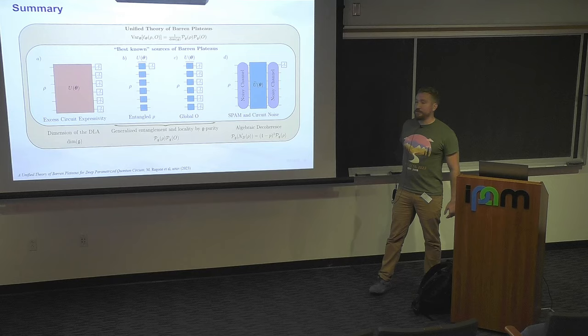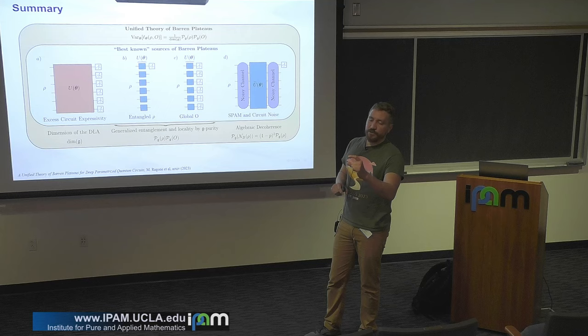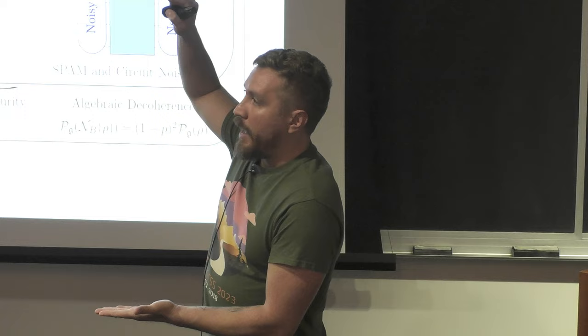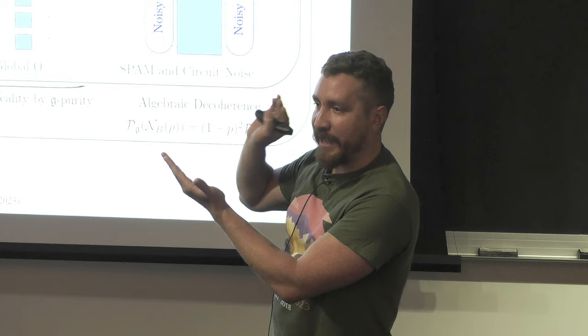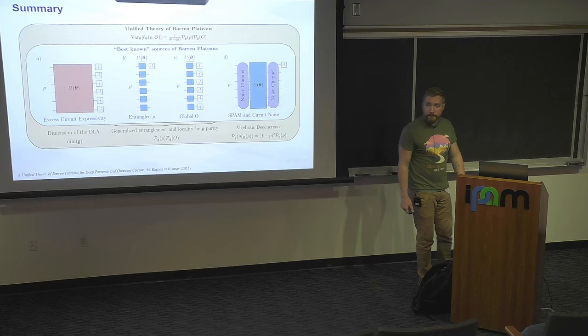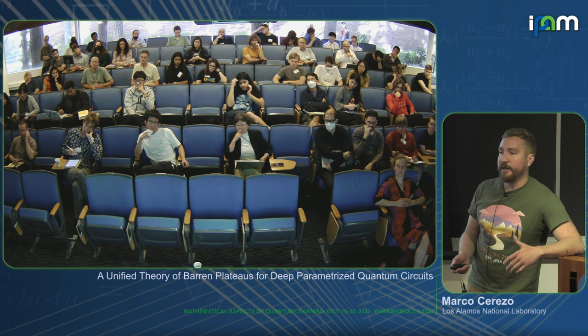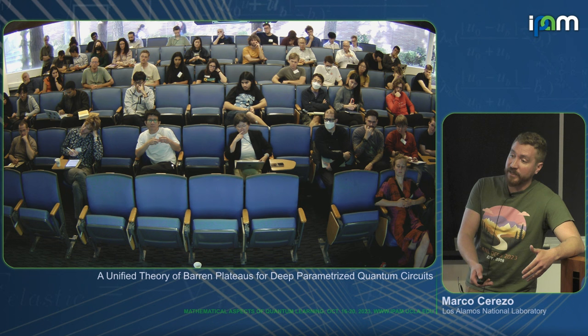Audience question: what is the intuition for why entanglement induces Barren Plateaus? In the standard sense with local circuits, marginal states of highly entangled states are nearly maximally mixed, so gates acting on reduced states do essentially nothing. But here, the relevant notion is entanglement relative to the algebra. Previous results involved local observables with local circuits — entanglement seemed like the issue, but you can go to other circuits where entanglement is perfectly fine.